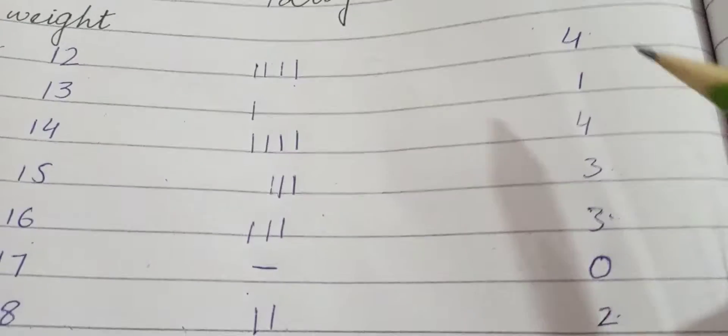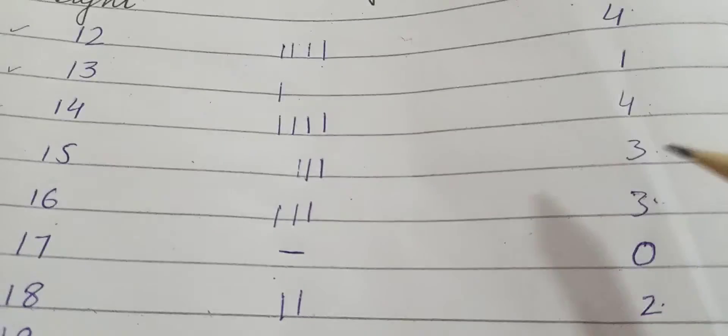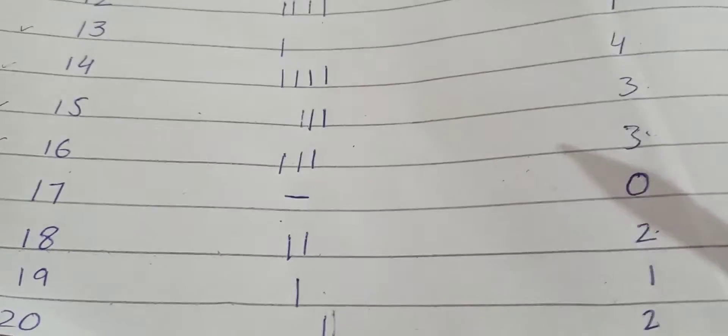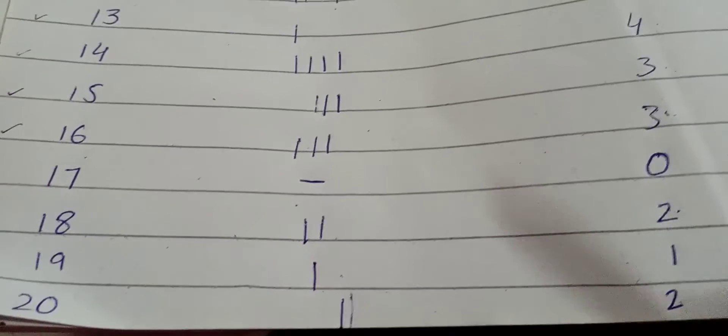13, when the weight was 13, how many times? 1 time. 14, how many times? 4 times. 15, 3 times. 16, 3 times. 17, 18, counting, 18, 2 times. 19, 1 time. 20, 2 times.